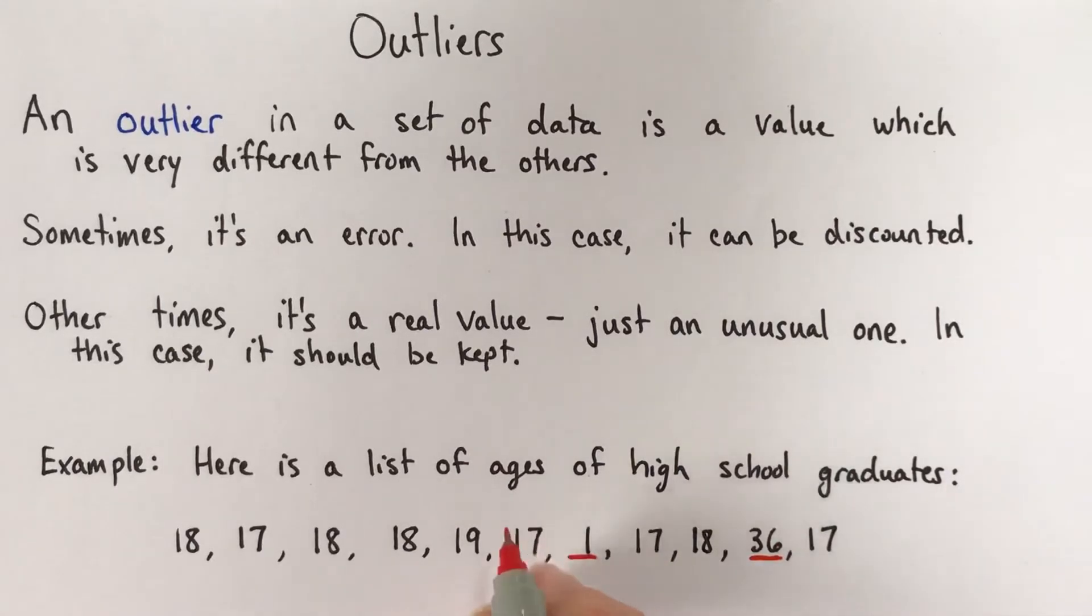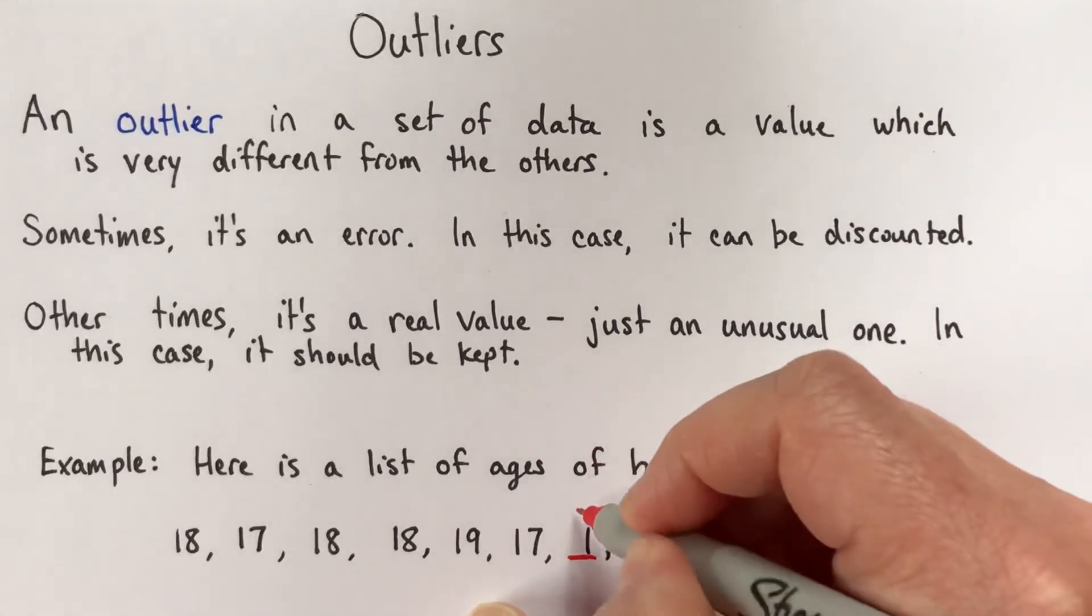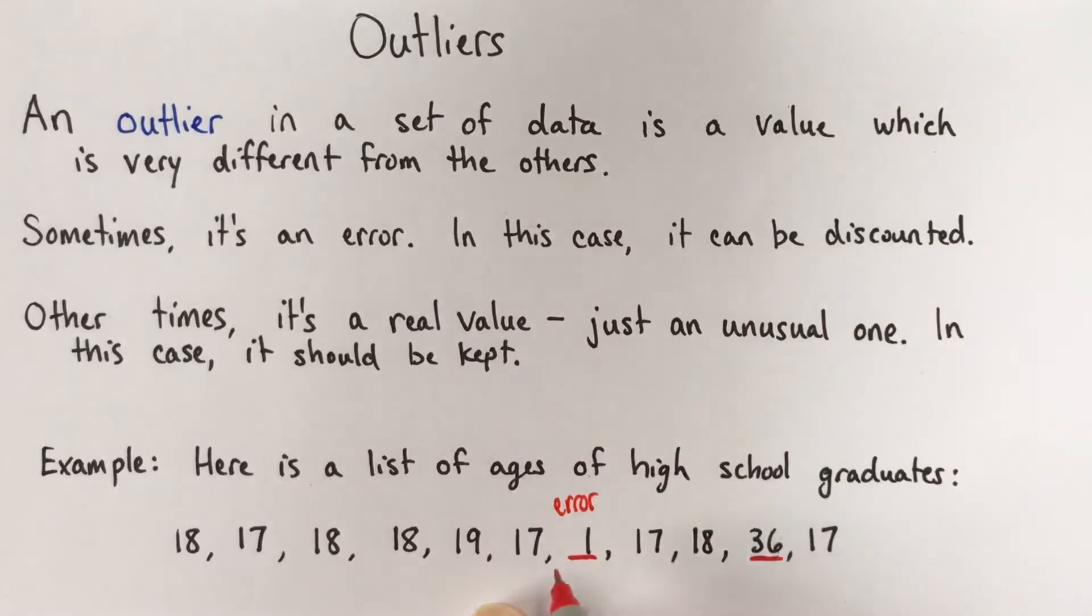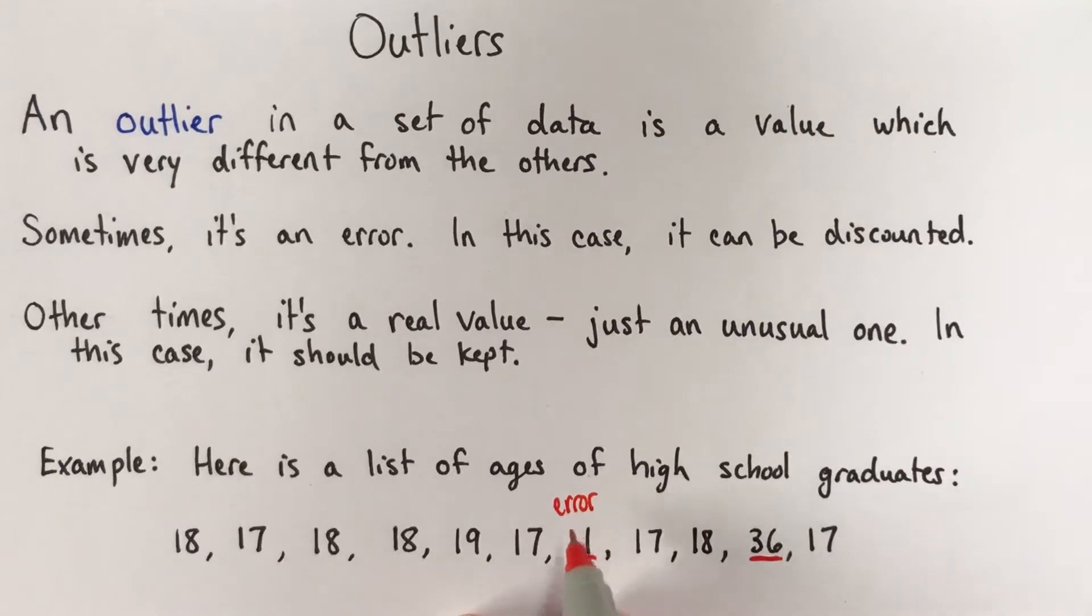So the 1, we can sort of deduce because we know what the context is, that it's the ages of high school graduates, this is just a mistake, this is an error. Someone wrote it down wrong, or they were typing it in and they tried to type 17, but only the 7 didn't come through. This is an error.